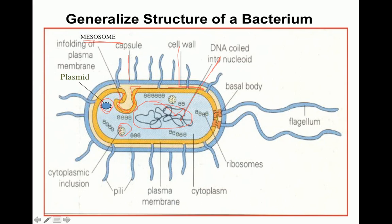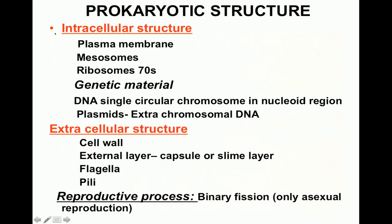The flagellum emerges from the cell wall and is responsible for the movement of the bacterium. Pili or fimbria also emerge from the cytoplasmic membrane and are responsible for attachment of the cell to various sites.